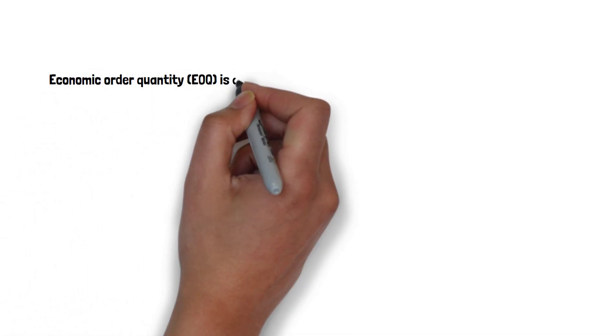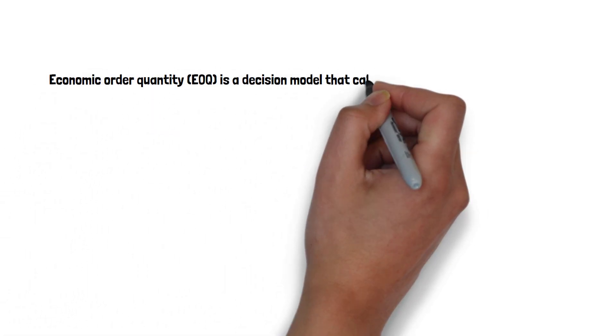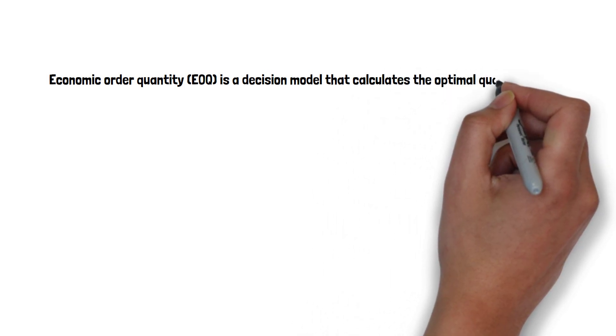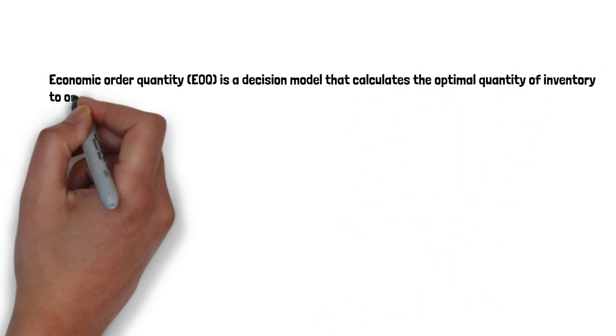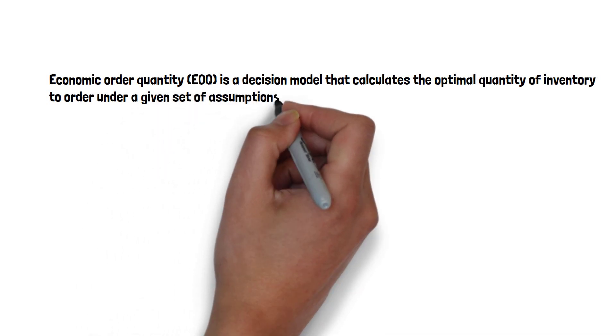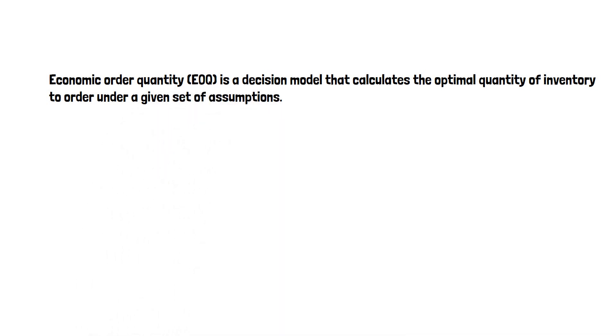Economic order quantity, EOQ, is a decision model that calculates the optimum quantity of inventory to order under a given set of assumptions.